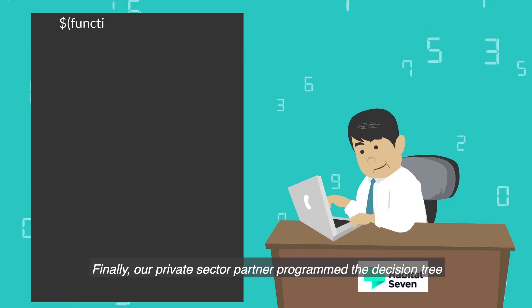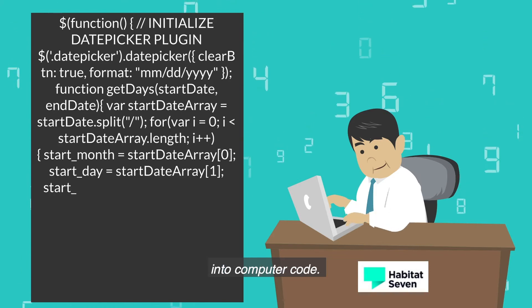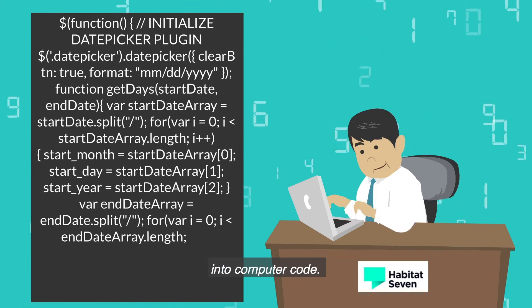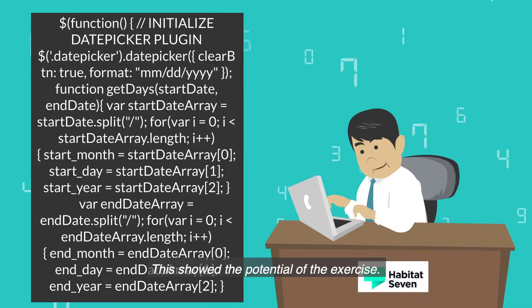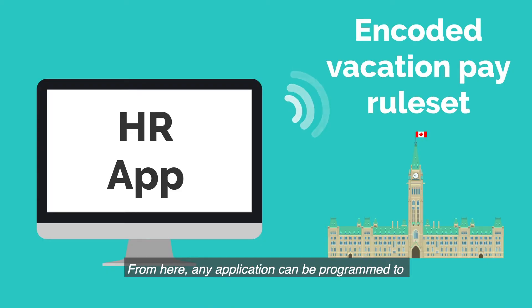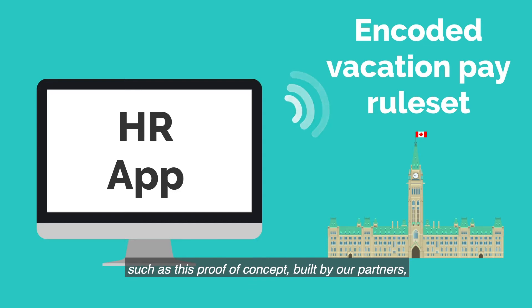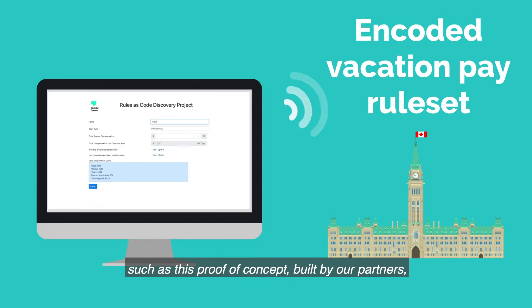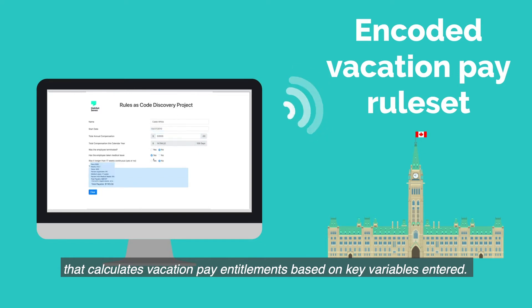Finally, our private sector partner programmed the decision tree into computer code. This showed the potential of the exercise. From here, any application can be programmed to automatically connect and use this code, such as this proof of concept, built by our partners, that calculates vacation pay entitlements based on key variables entered.